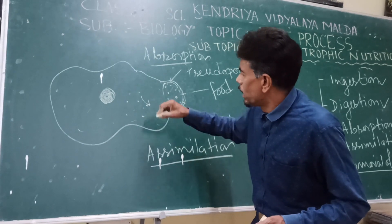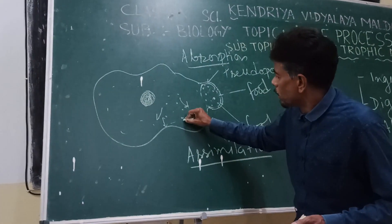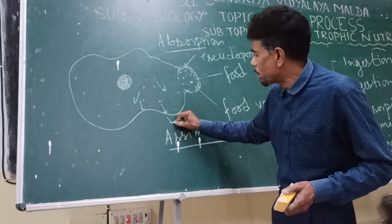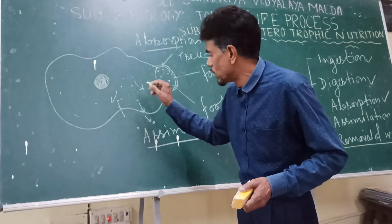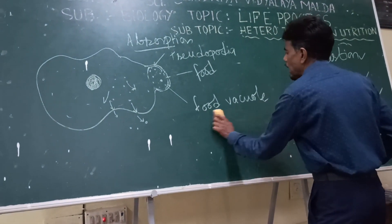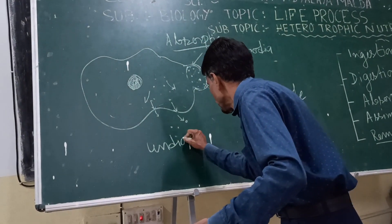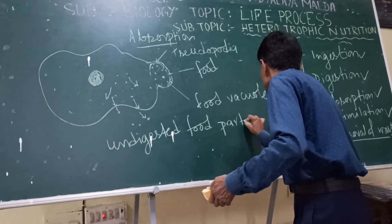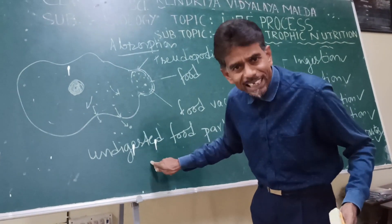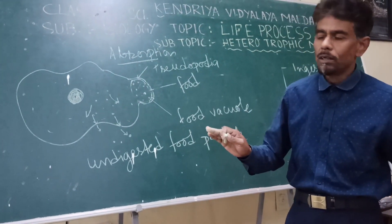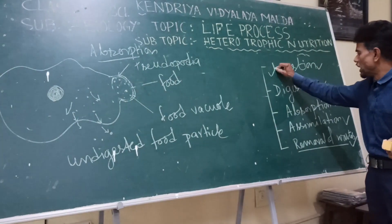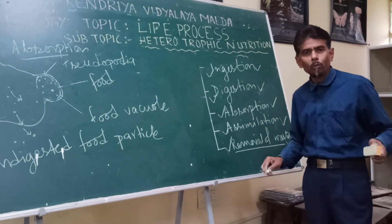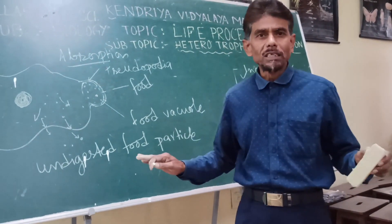The unwanted food material that is not useful for the body migrates towards the cell membrane, and through pores it comes out as undigested food material. This removal of undigested waste is called egestion. So these five steps — ingestion, digestion, absorption, assimilation, and egestion — complete the whole process of holozoic nutrition.